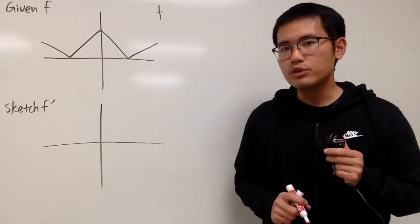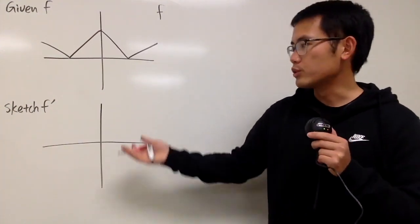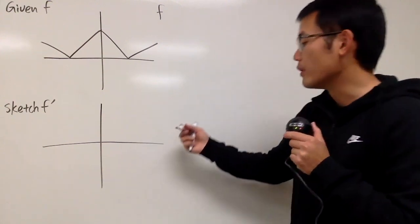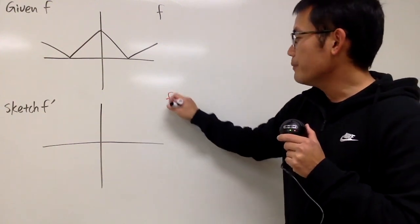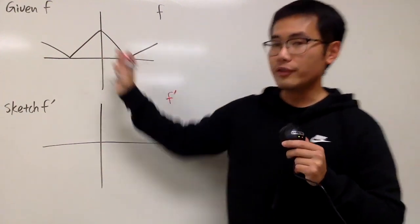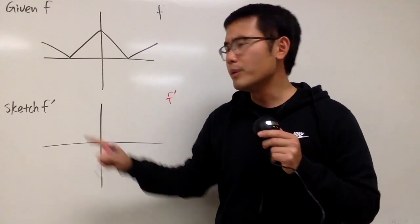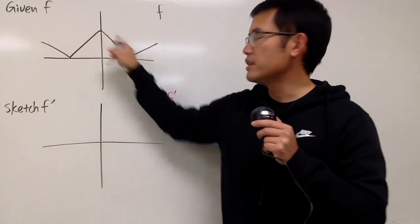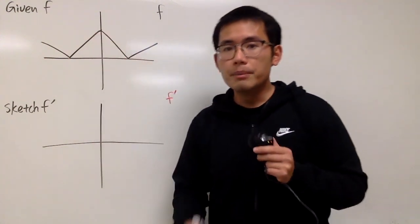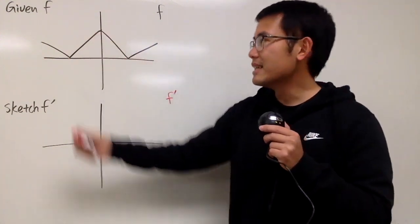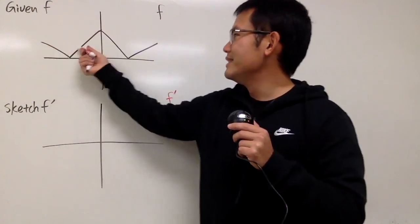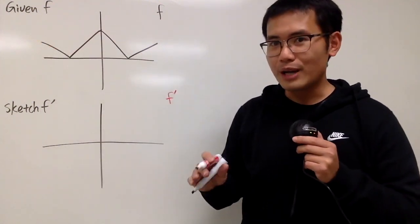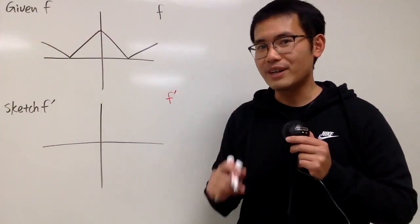We're given the graph of the original function and we'll try to sketch its derivative. Notice that we have a bunch of corners, so we actually do not have the derivative here, here, and there — so be really careful. But the good thing is that this, this, and that are all straight lines, so we actually just have constant derivative.